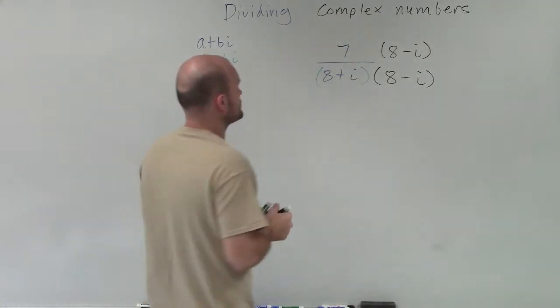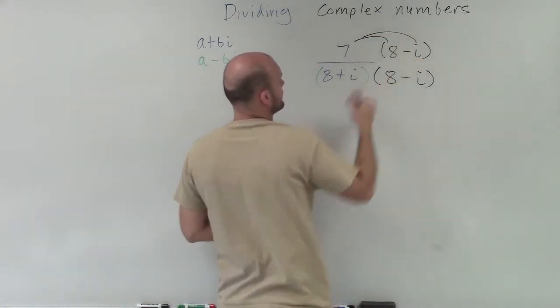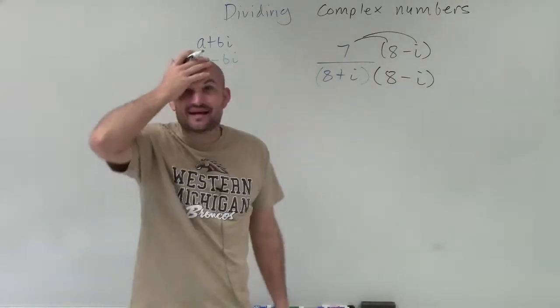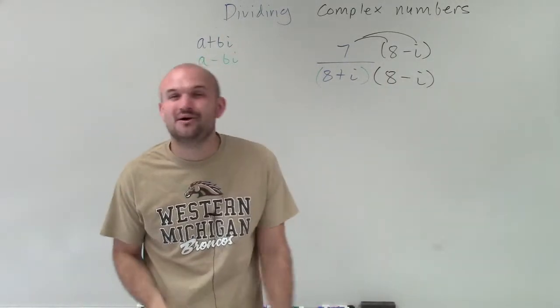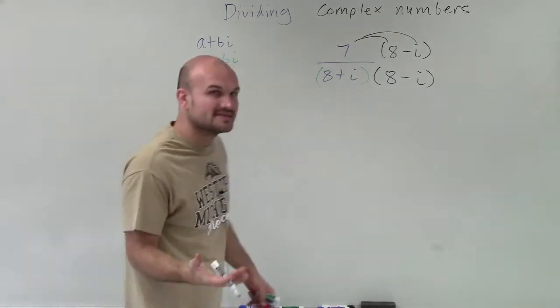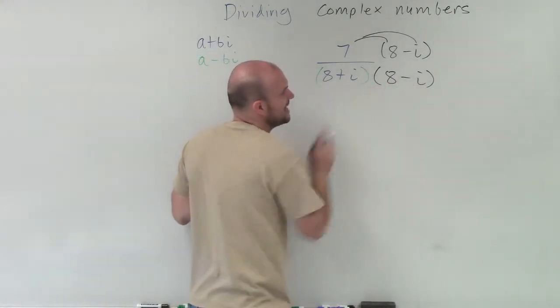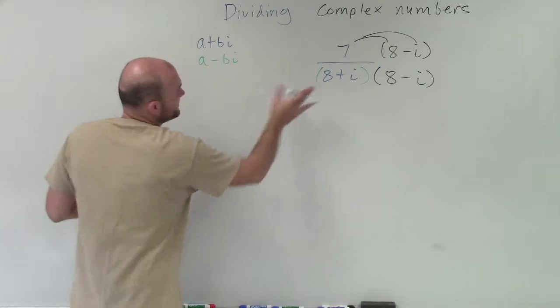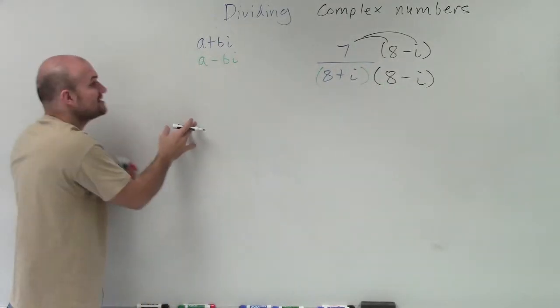So now we apply our distributive property. And then I'm like, oh man, I have a binomial times another binomial. I don't want to do FOIL. It takes so long. But notice what happens when we have a number times its conjugate. That number times its conjugate is the same thing as the difference of two squares.